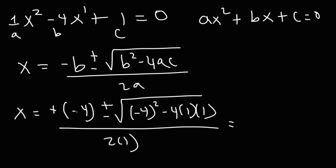So these two negatives will cancel, giving us positive 4. Negative 4 squared is 16. And then 2 times 1 is 2. Now 16 minus 4 is 12.